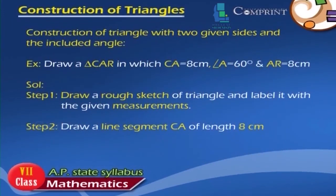Construction of triangle with two given sides and the included angle. Example: Draw a triangle CAR in which CA is equal to 8 cm, angle A is equal to 60 degrees, and AR is equal to 8 cm.